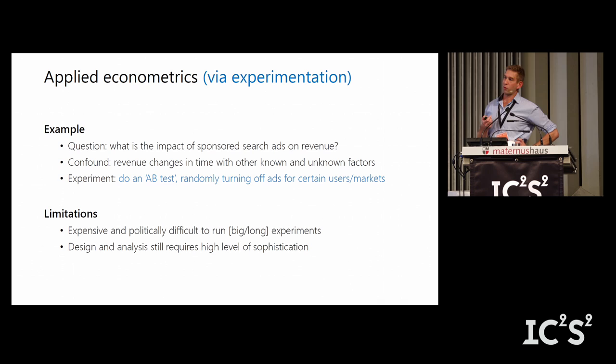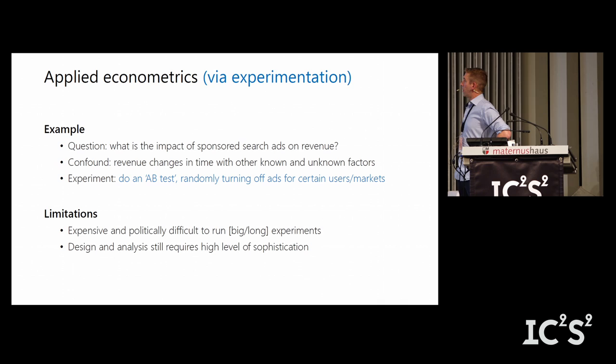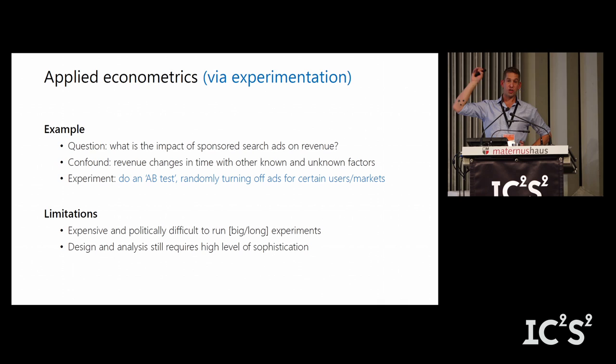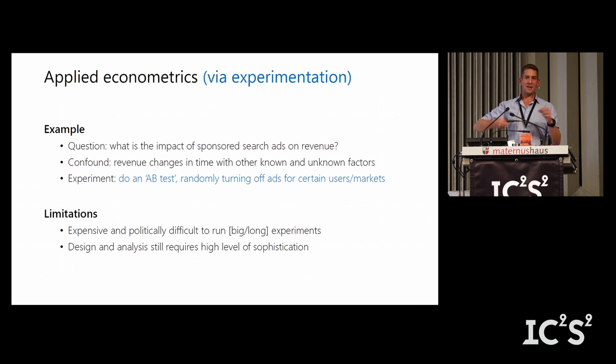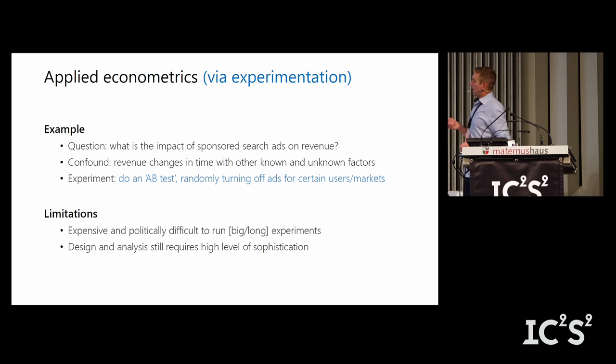There are a few different ways applied econometrics works. The best way is via experimentation. For example, if you want to know the impact of sponsored search ads on revenue, the problem is that search ads are targeted toward people already likely to click. So you run an A/B test — turn ads on or off randomly — and that gives you the real causal effect of advertisement because the ads were randomized. It's an experiment, so you know the causal effect is valid.